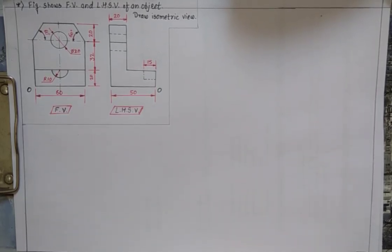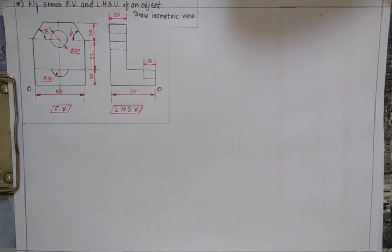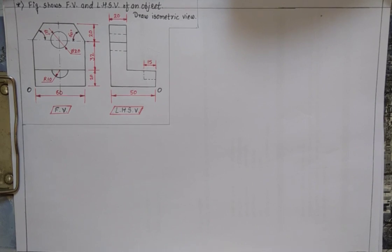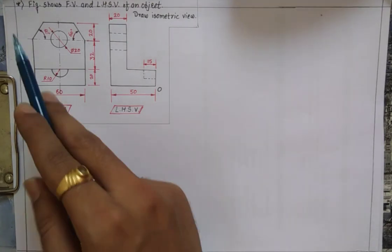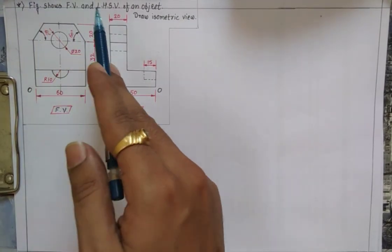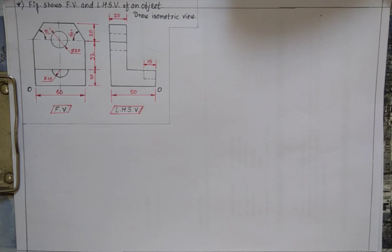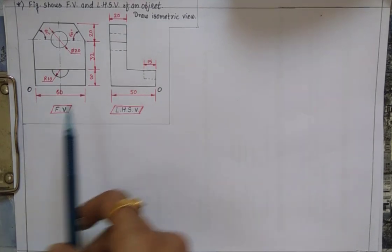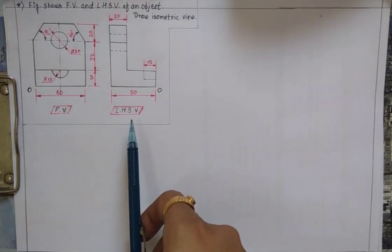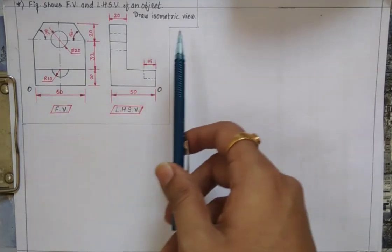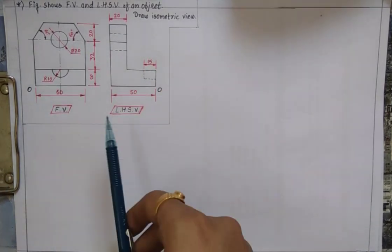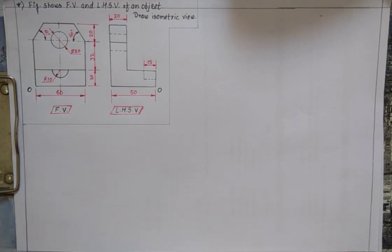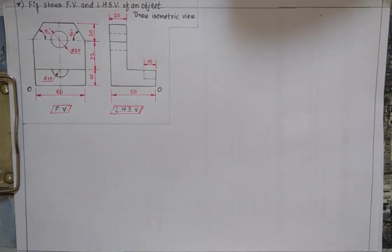Dear students, welcome to this session of engineering graphics. In this session we are going to solve one problem from isometric projection. The problem statement shows the front view and left-hand side view of an object, and you have to draw an isometric view. By reading these two views, we first need to note the overall dimensions: length, width, and height of the object.